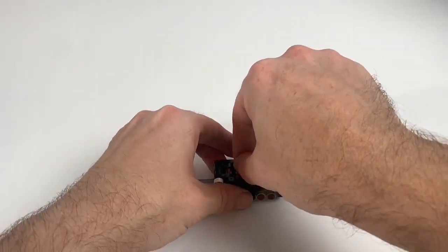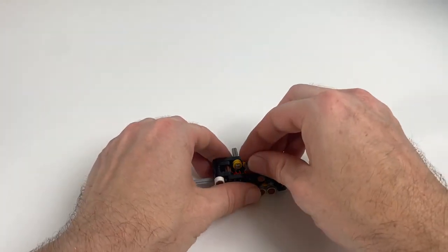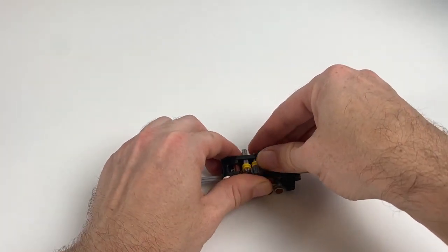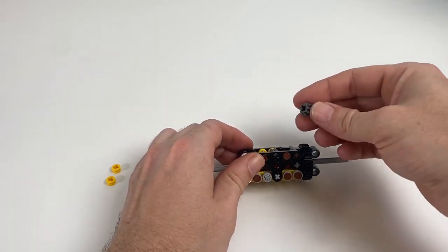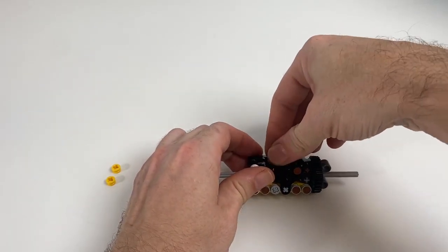This is what I mean by being a little bit fiddly. There's quite a few little bushes you've got to get onto the end of little axles that are kind of stuck in the middle of a bunch of half beams, and it's pretty easy to have bits just ping off and kind of disappear into the ether.